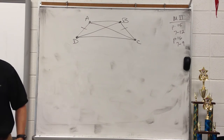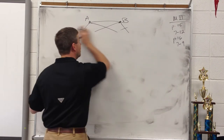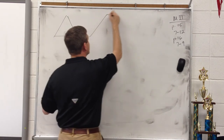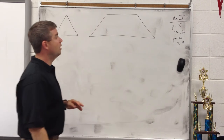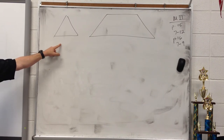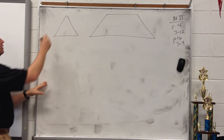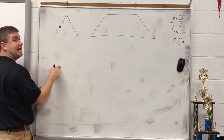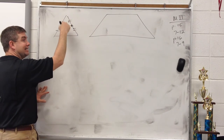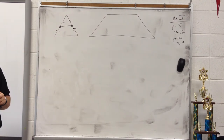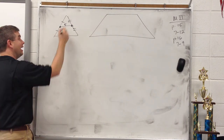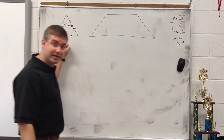Now we have to talk about midsegment. The midsegment of a trapezoid is the segment that connects the midpoints of its legs. Back in 5.1, we talked about the midsegment of a triangle — it connects the midpoints of two sides. Its two properties are: it's half the third side, and it's parallel to the third side. Those are the properties of a triangle midsegment.